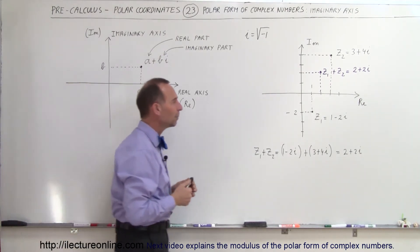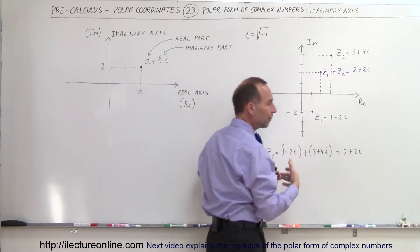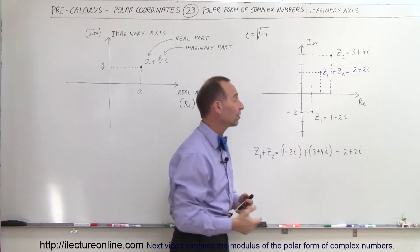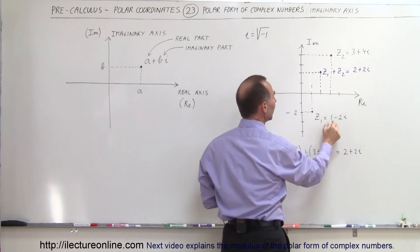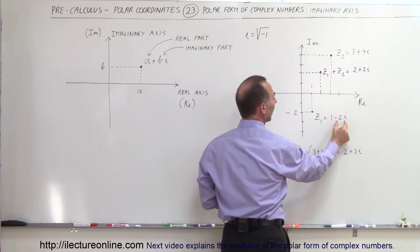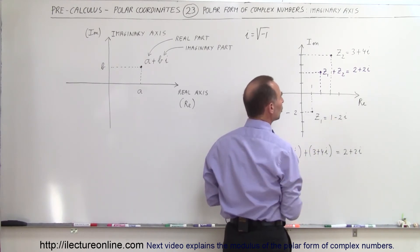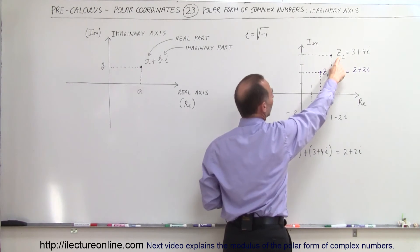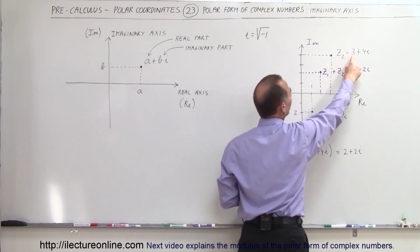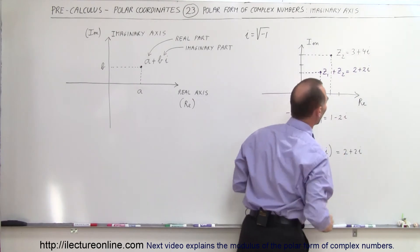Now, let's say we have two complex numbers. Z1 (and typically Z is the letter used for complex numbers) is equal to 1 minus 2i. That means it has a real part equal to 1 and an imaginary part equal to minus 2. We have a second complex number, Z2, which has a real part equal to 3 and an imaginary part equal to 4.